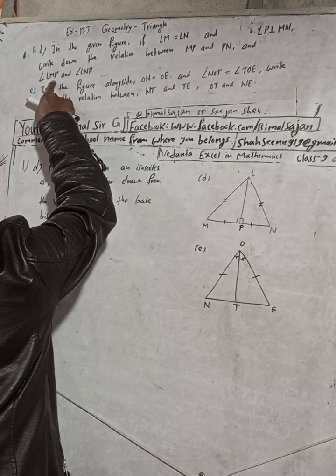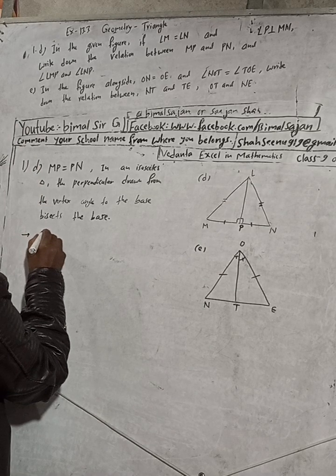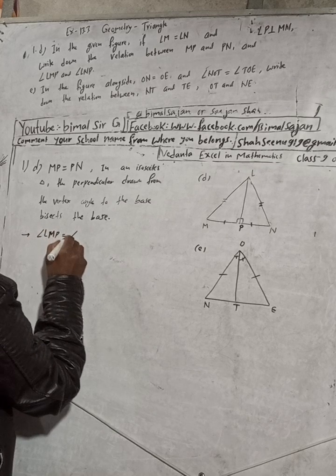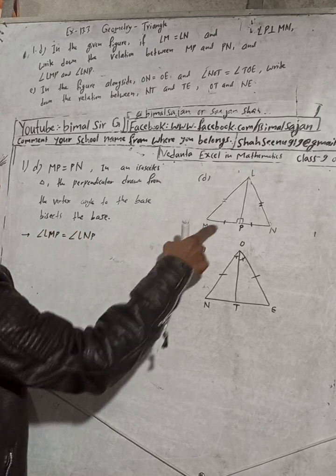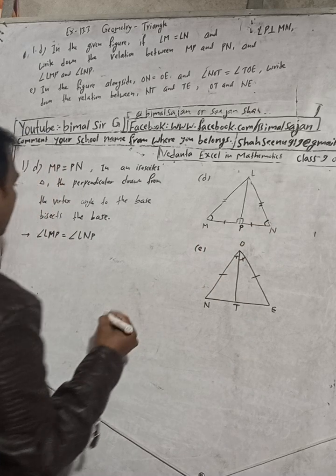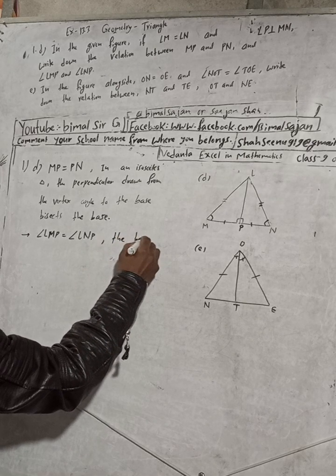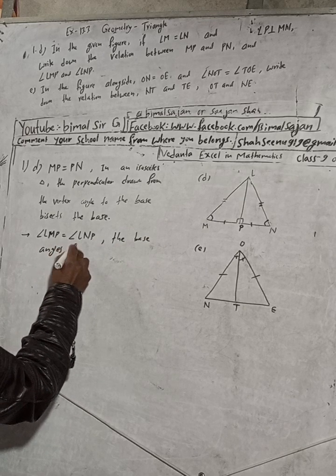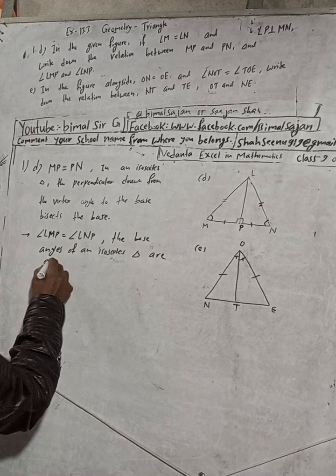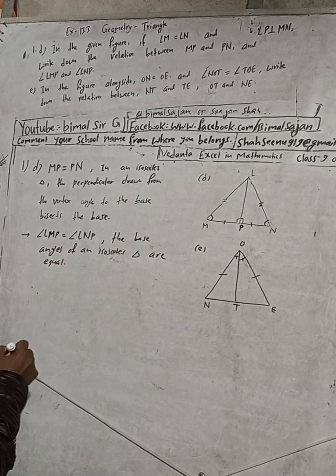The second relation: angle LMP is equal to angle LNP. The reason is that the base angles of an isosceles triangle are equal. Since this is an isosceles triangle, the base angles are equal, so this is the relation.